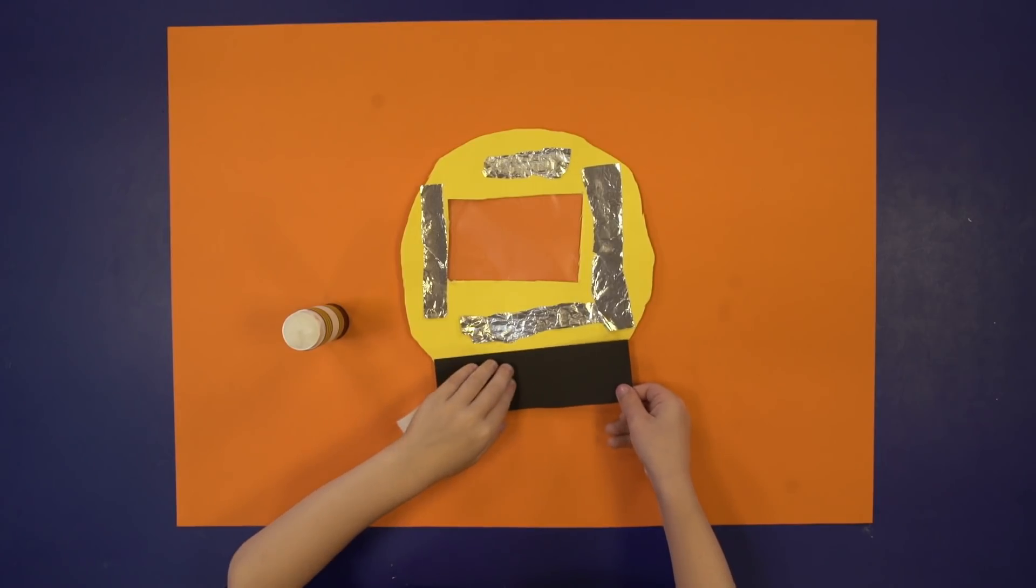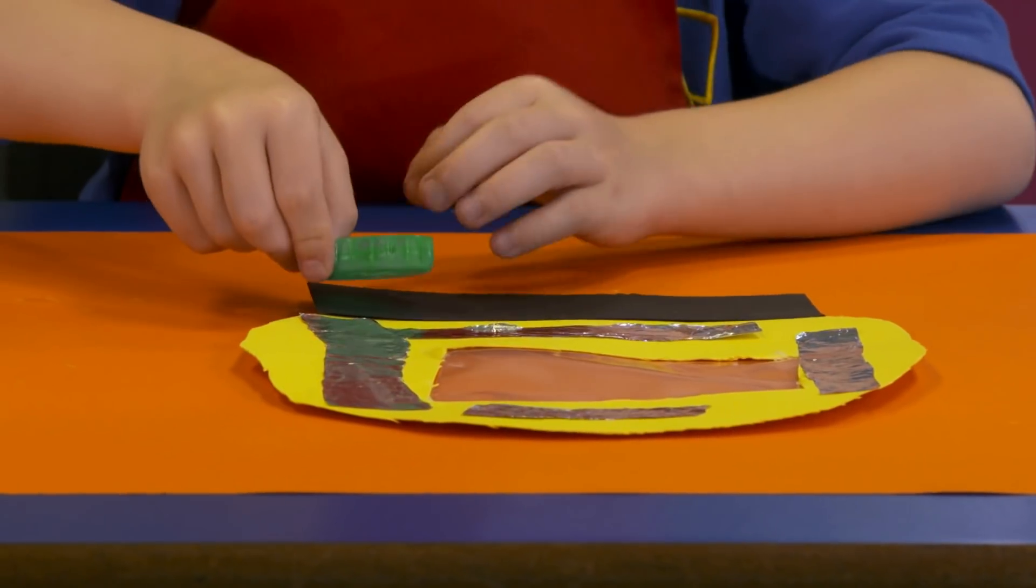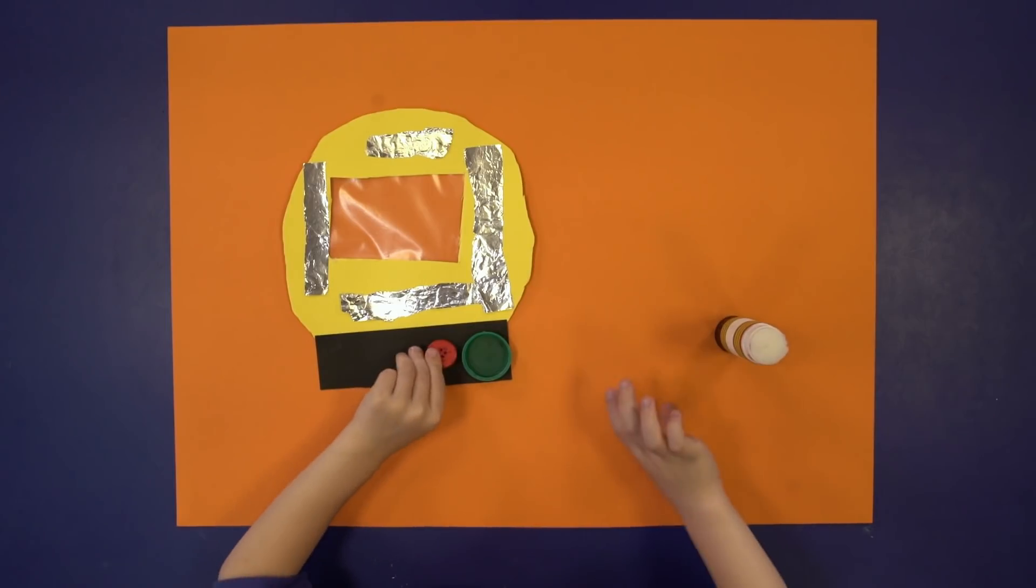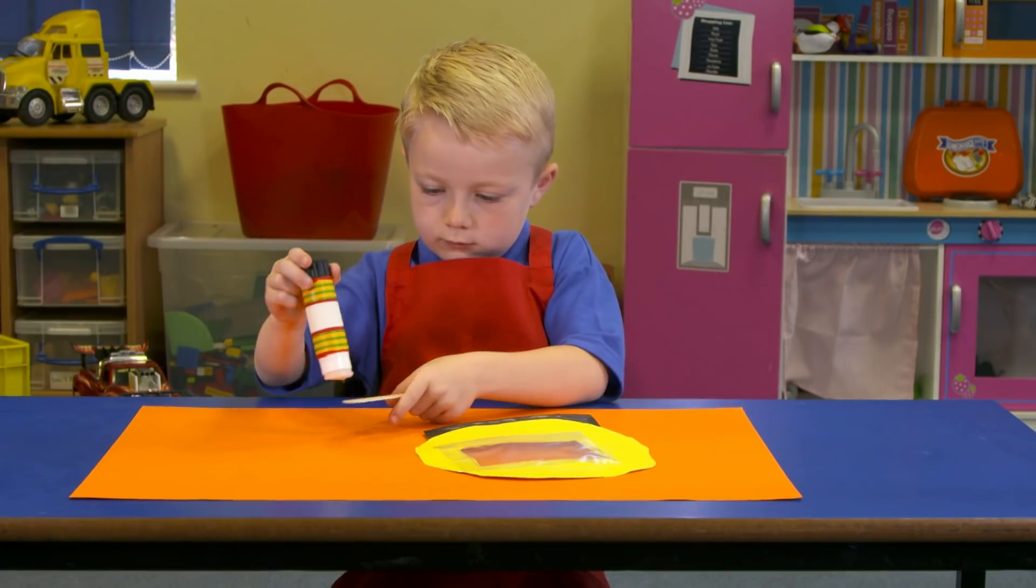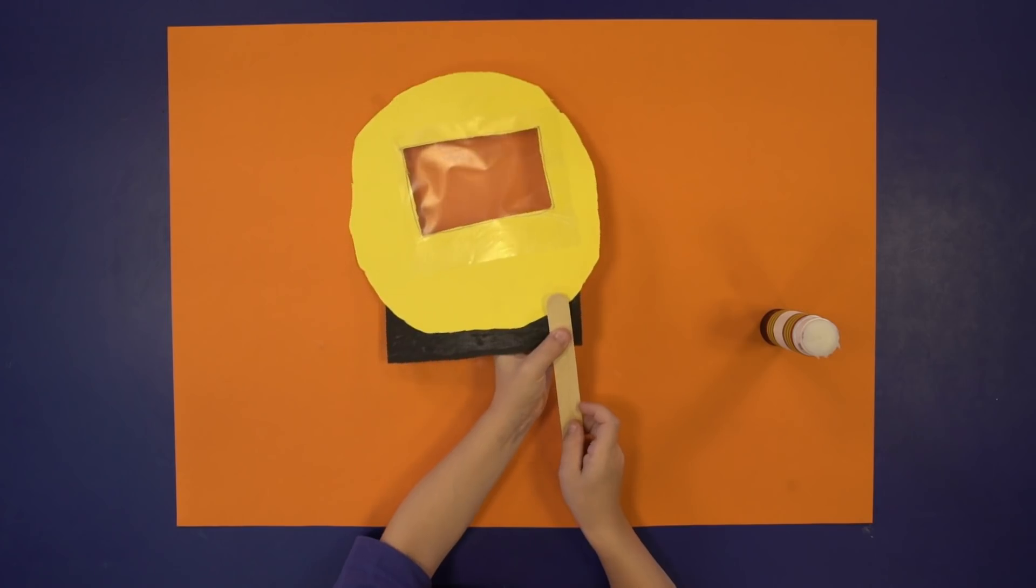Glue a strip of black card along the bottom. Stick on green and red circles to make the buttons. Then stick a lollipop stick onto the back to hold it with.